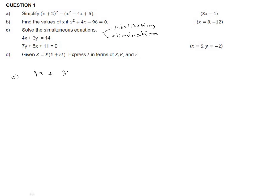The first equation is 4x + 3y = 14 — call this Equation 1. We rearrange the second equation to 5x + 7y = -11 — call this Equation 2. The coefficients for x are 4 and 5, and for y are 3 and 7. We multiply Equation 1 by 5 and Equation 2 by 4 to eliminate variable x.